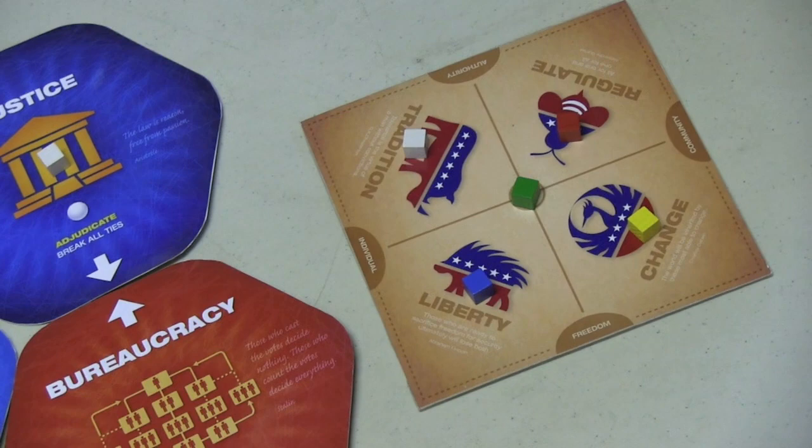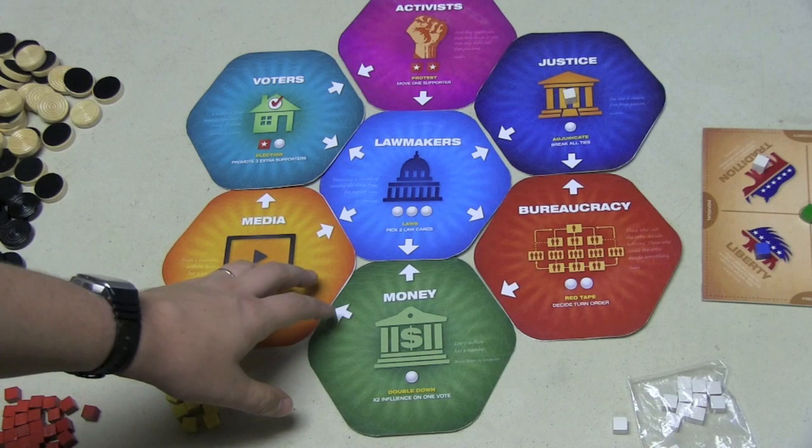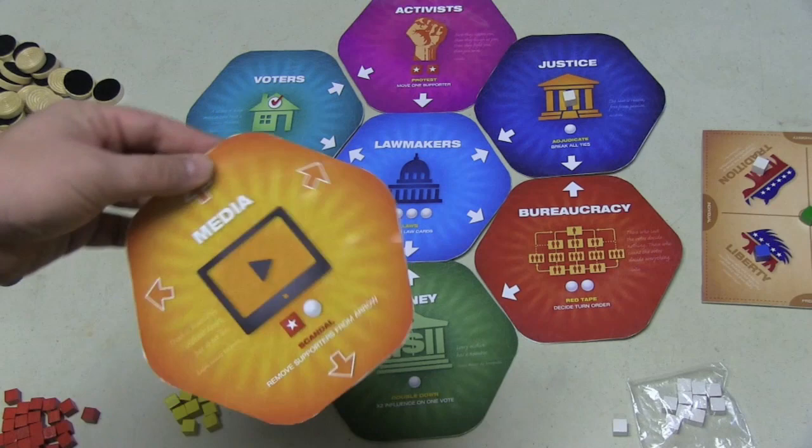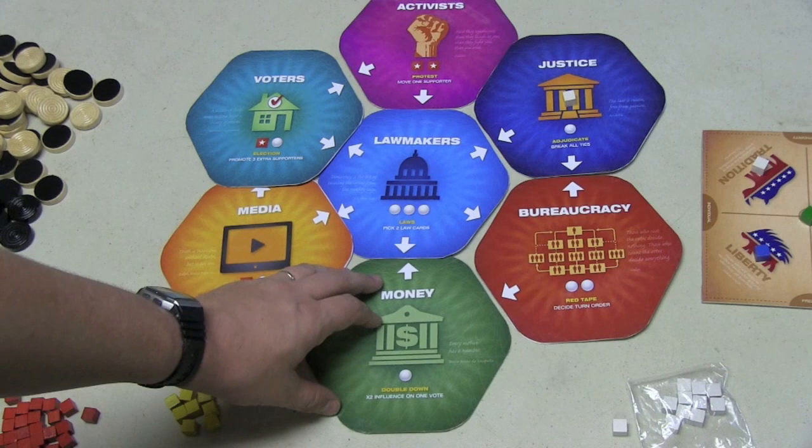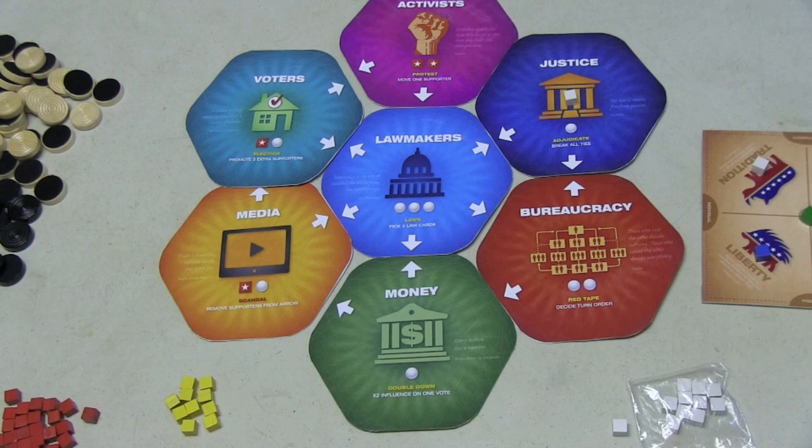More importantly, you're trying to control the different areas here on the board. This is a sample board layout — there are other scenarios; you can turn the tiles over and move them around. But we're just going to look at the basic scenario. We have voters, activists, justice, bureaucracy, money, media, and lawmakers.